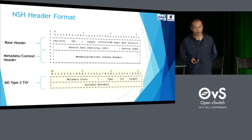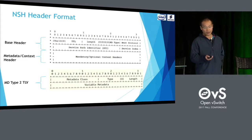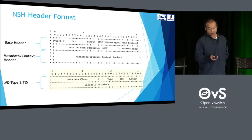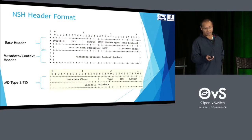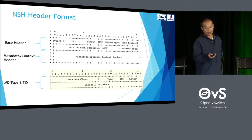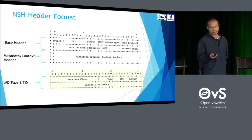Here is the NSH header format. In the NSH header, we have a base header with fixed length. It includes the NSH version, OAM flag, TTL, length, metadata type, and next protocol, as well as the service path identifier and service index. The header also includes a metadata header and a context header. For MD type 1, the context header is fixed length at 16 bytes. For metadata type 2, we have TLVs in the metadata header, where each TLV is defined by metadata class, metadata type, metadata length, and metadata content.